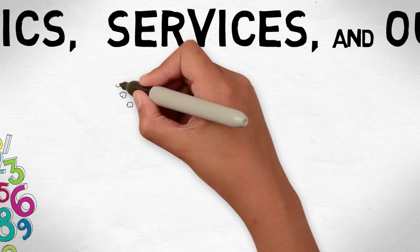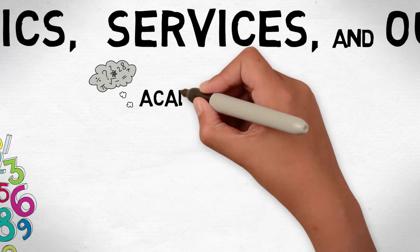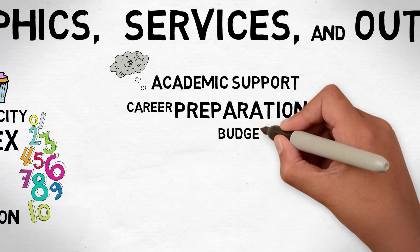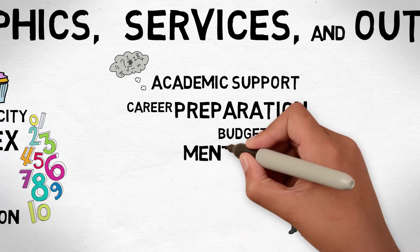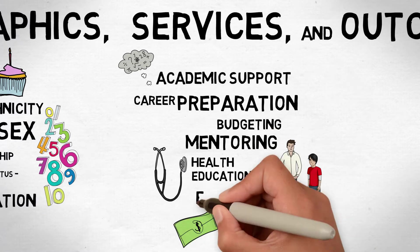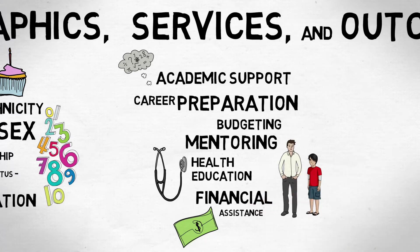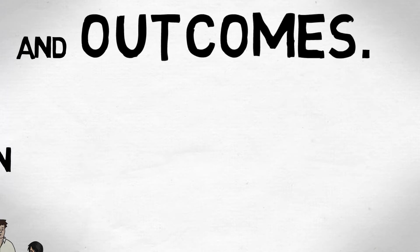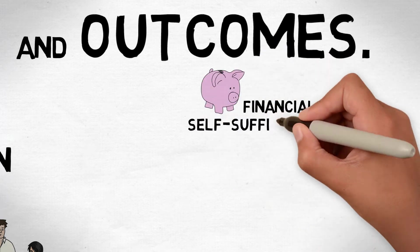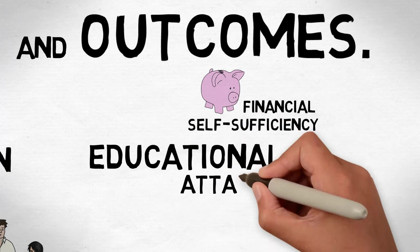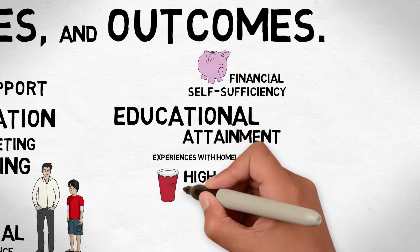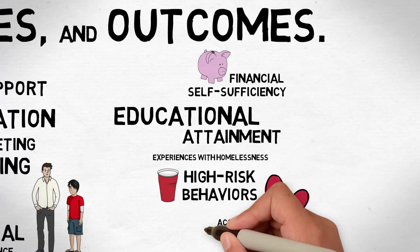By services, we mean those services provided by the state to the youth in transition, like academic support, career preparation, budgeting, mentoring, health education, and financial assistance. And finally, NYTD collects information on the outcome experiences reported by young people in five areas: financial self-sufficiency, educational attainment, experiences with homelessness, high-risk behaviors, and access to health insurance.